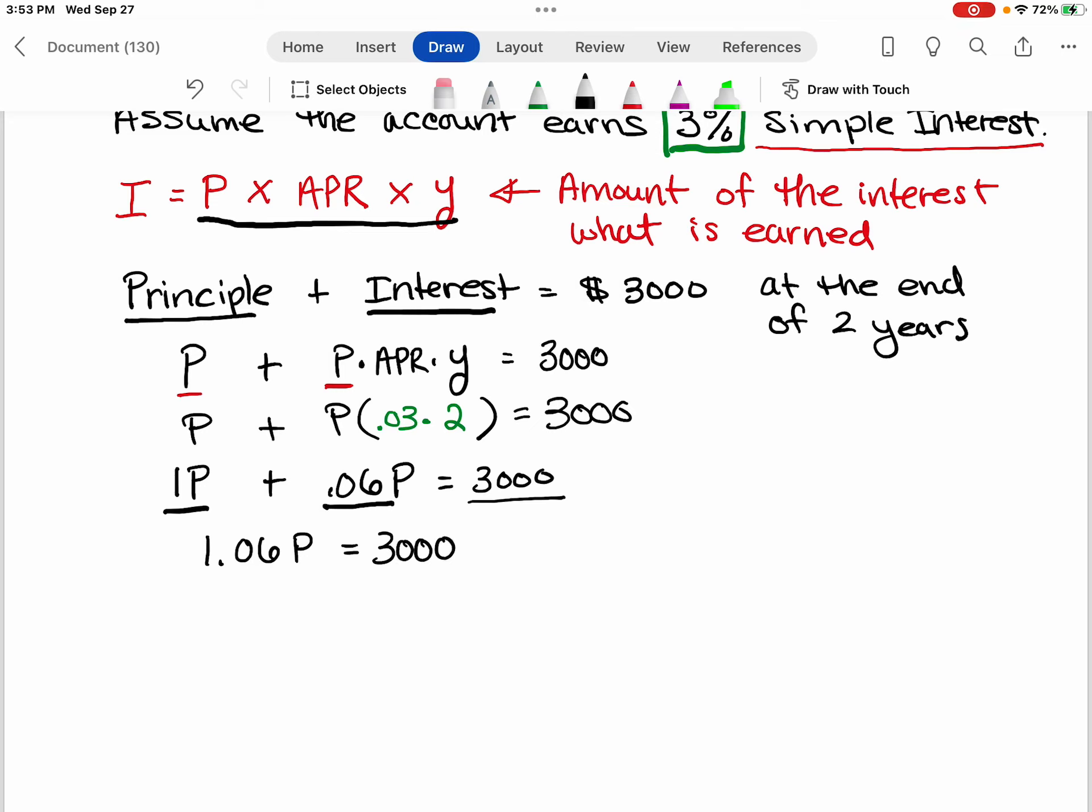So now to solve for P, I just need to divide both sides by 1.06. I can cancel them out on this side. My principal is going to be whatever I get when I take 3000 divided by 1.06.